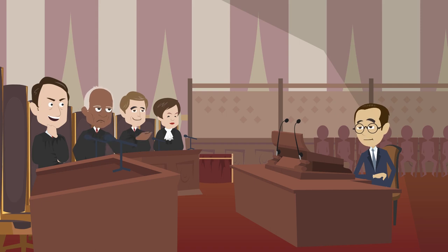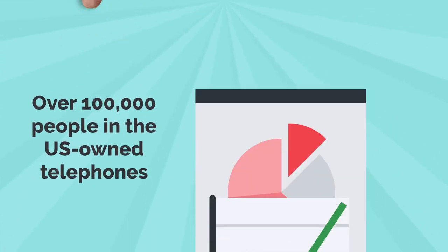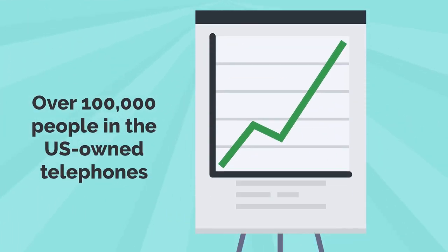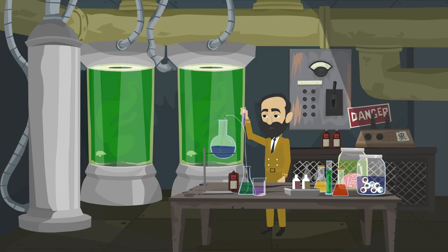The telephone invention proved to be a great success and within 10 years, over 100,000 people in the US owned telephones. However, a few years after launching his company, Graham lost interest in managing the business aspect of his enterprise. He therefore sold his shares in the company.